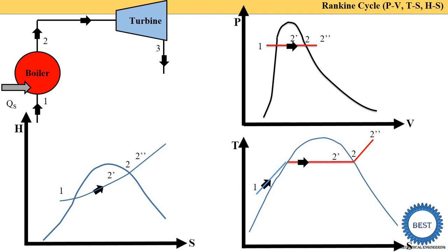In the turbine, pressure is reduced as steam does mechanical work. On the PV diagram, point three comes lower than point two because pressure decreases. Volume also increases because it is an expansion process. We draw a curve line showing pressure reduced from P2 to P3 and volume increased from V2 to V3. For dry and saturated or superheated inlet steam, slightly different curve lines are drawn.